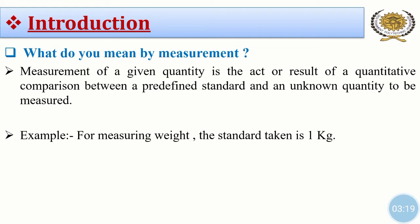Let us understand this definition by taking one example. For measuring weight, the standard taken is 1 kilogram. Here the weight of a quantity is unknown. We have to measure the weight of that quantity, but we know the predefined standard, that is kilogram. This kilogram standard is already defined and universally acceptable. So we can compare the weight of the unknown quantity with the predefined standard, that is kilogram.